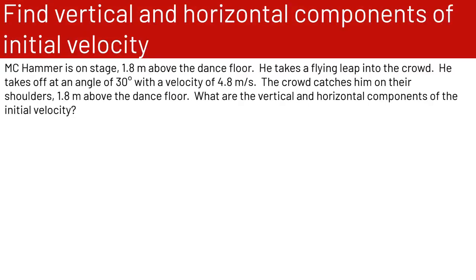Let's look at the first problem: find the vertical and horizontal components of the initial velocity. MC Hammer is on stage 1.8 meters above the dance floor. He takes a flying leap into the crowd at an angle of 30 degrees with a velocity of 4.8 meters per second. The crowd catches him on their shoulders 1.8 meters above the dance floor. What are the vertical and horizontal components of the initial velocity?